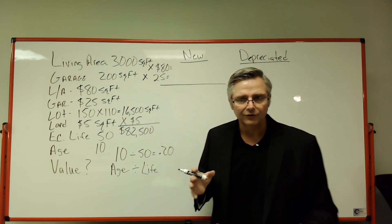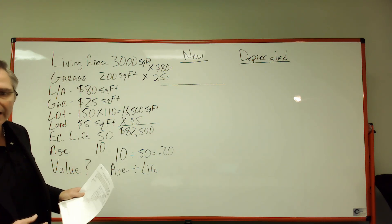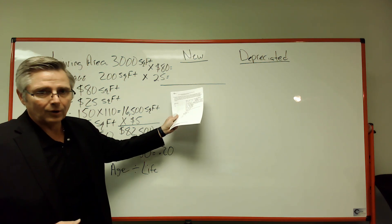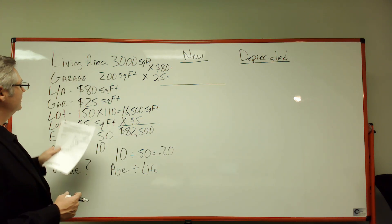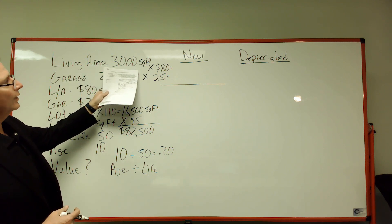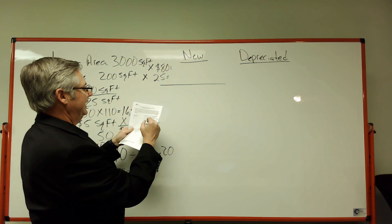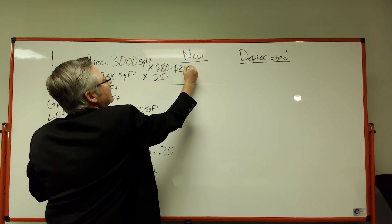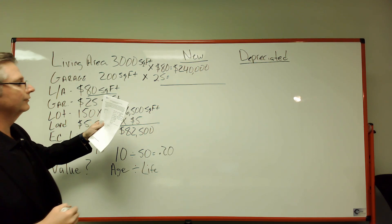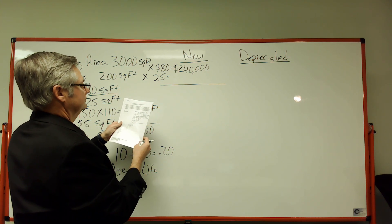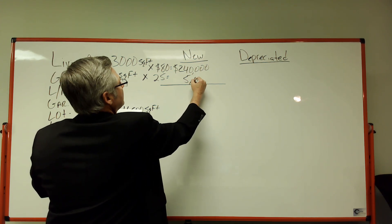I've already written this out on the board. Make sure you write everything they give you and what they're asking for. There's a new price of the house and then a depreciated value. So the living area is 3,000 square feet at $80 a square foot — 3,000 times 80 is $240,000. The garage is 200 square feet times $25 a square foot, which gives us $5,000 for the garage.